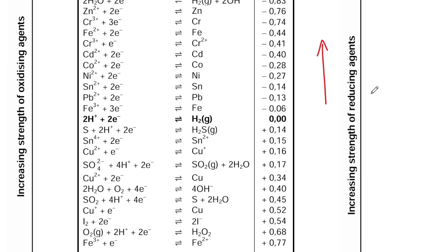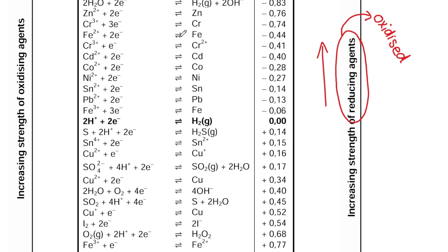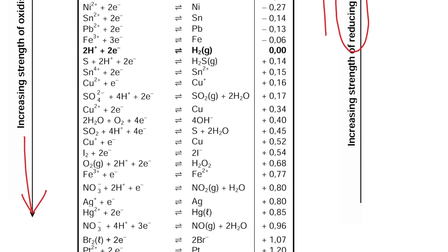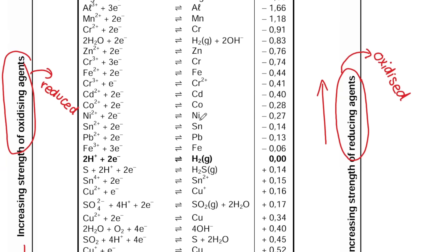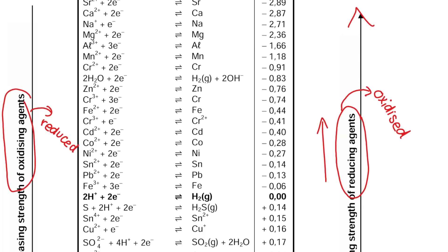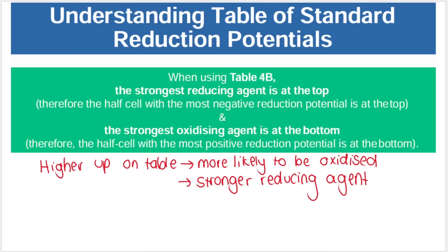If you are a strong reducing agent, as discussed in previous videos, that means you will be oxidized — it's always the opposite. Strong reducing agents are oxidized. The other arrow on the table points downward, meaning as you go down you are a stronger oxidizing agent, and strong oxidizing agents are reduced. So the higher up you are on the table, the more likely you are to be oxidized, and the lower you are on the table the more likely you are to be reduced.